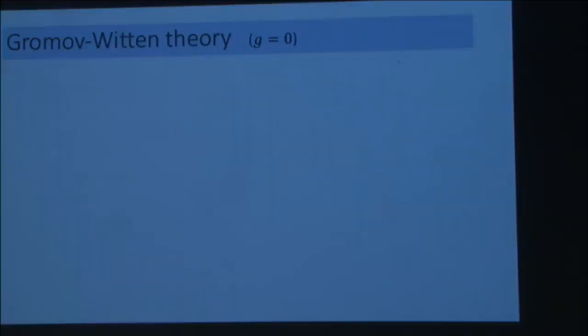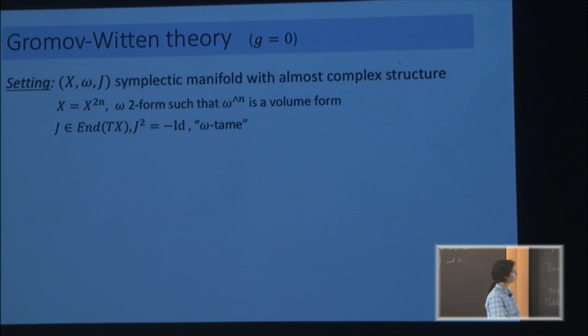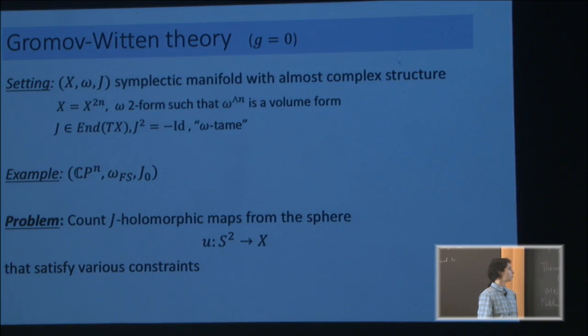I will be talking only about genus zero. So the world is a symplectic manifold — an even-dimensional manifold with a fancy form on it — and I add to that an almost complex structure. Basically you can think of any Kähler manifold. The main example I want you to keep in mind is the complex projective space CPM, and the question at the core of Gromov-Witten theory is Gromov-Witten invariants.